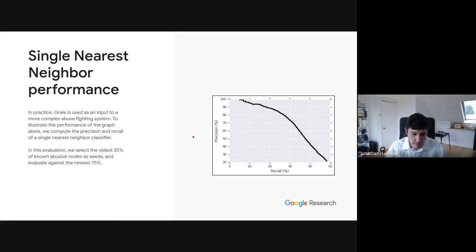To illustrate the performance is a little more difficult because in practice, GRAIL is actually used as one piece in a more complex abuse fighting system. So to try and break out the performance of the graph alone, we train a simple single nearest neighbor classifier on the graph and compute the precision and recall at various thresholds. To do the evaluation, we chose a realistic setting where we take just the older percentage of the nodes as our seed set, and then we evaluate the performance on newer nodes. And this is kind of the realistic setting where GRAIL is typically deployed, where we have data about things in the past, and we're trying to make predictions about new things that show up. And so you can see, even with this very simple classifier, we can get pretty high quality precision and recall.